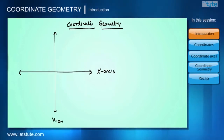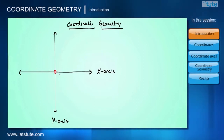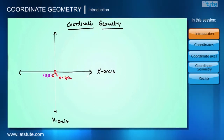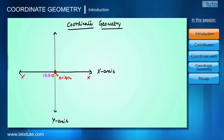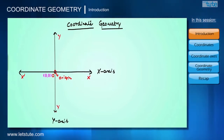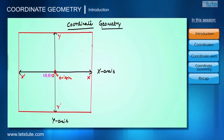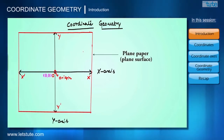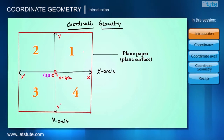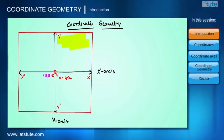Their point of intersection is called the origin. The x-axis is named as x-x' and the y-axis is named as y-y'. When these two axes are drawn on any plane, they divide that plane into four equal parts.